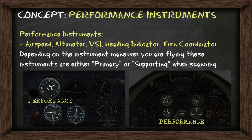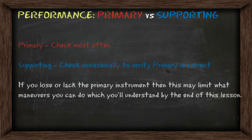Your performance instruments include airspeed, altimeter, VSI, heading indicator, and turn coordinator. Depending on the instrument maneuver you're flying, these instruments are either primary or supporting during your instrument scan. A primary instrument is one you're going to check the most often, and a supporting instrument is one you're going to check occasionally just to verify the primary is correct. If you lose or lack the primary instrument, then this may limit what maneuvers you can do, and you'll understand why by the end of the lesson.